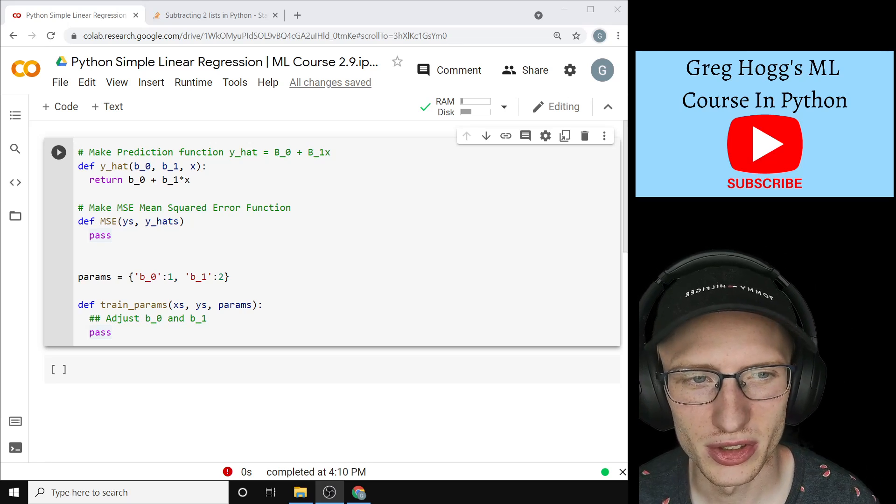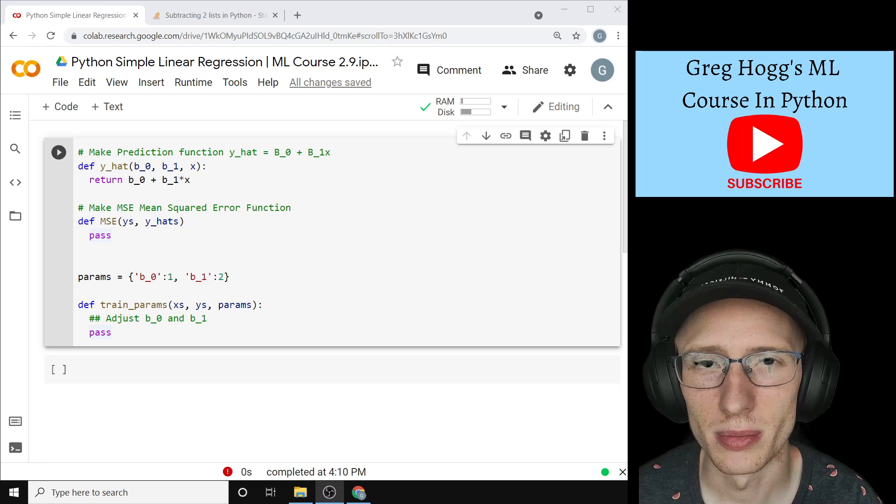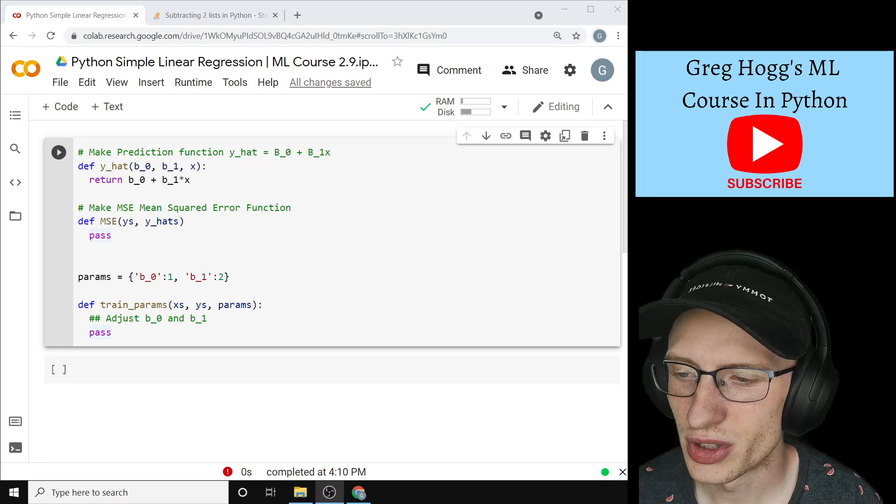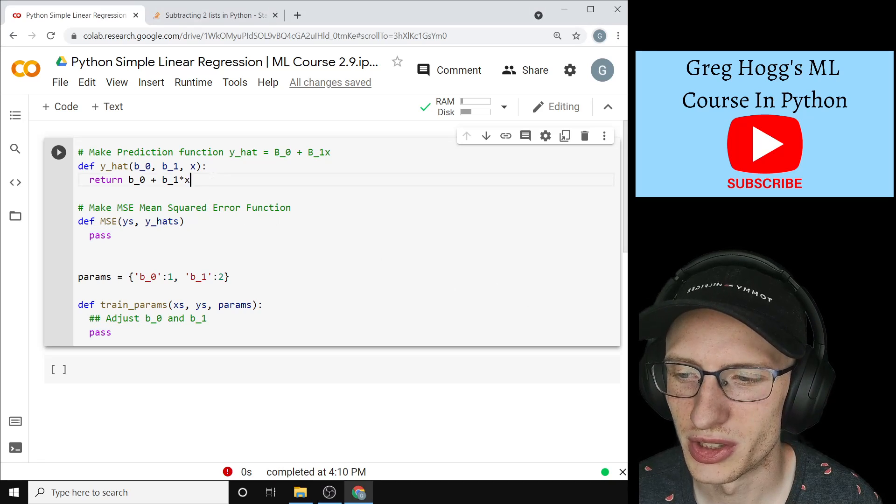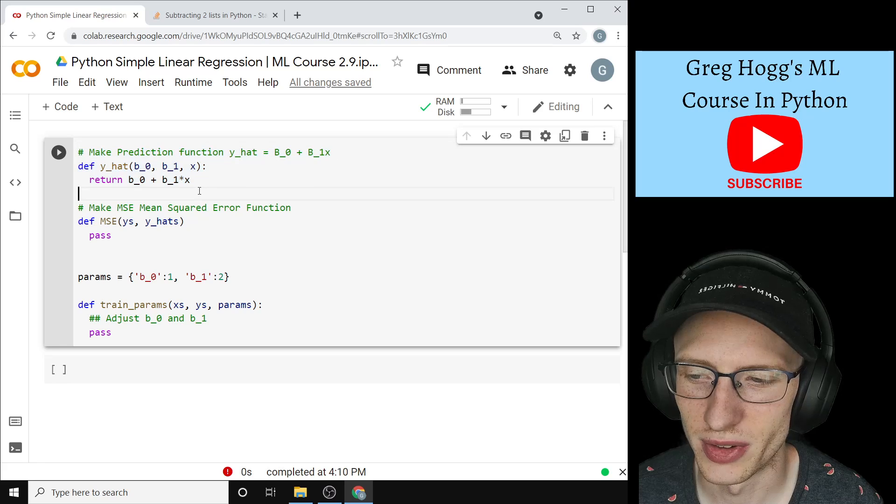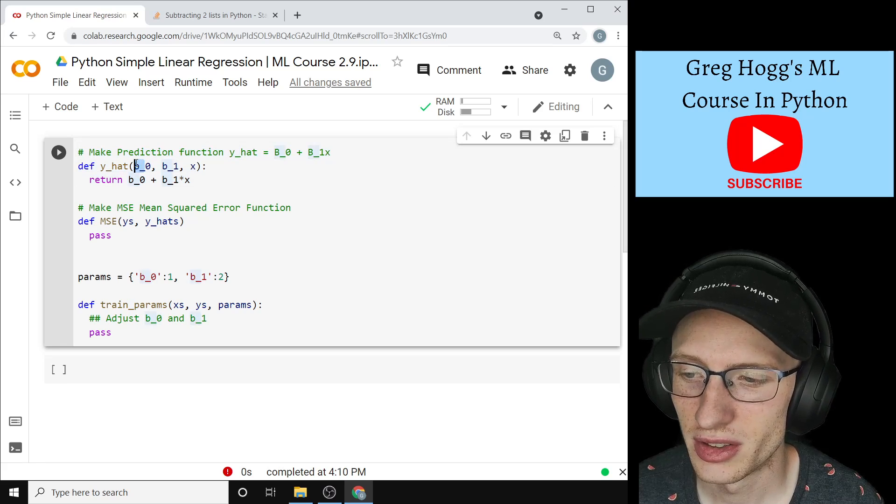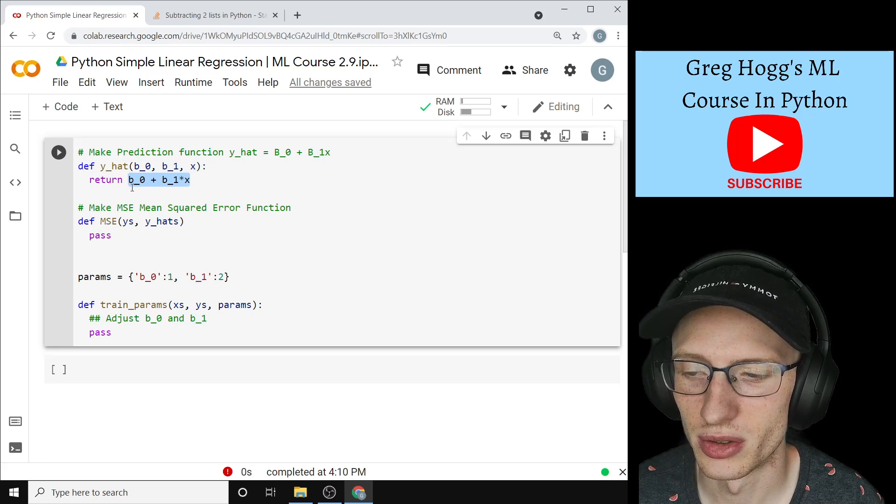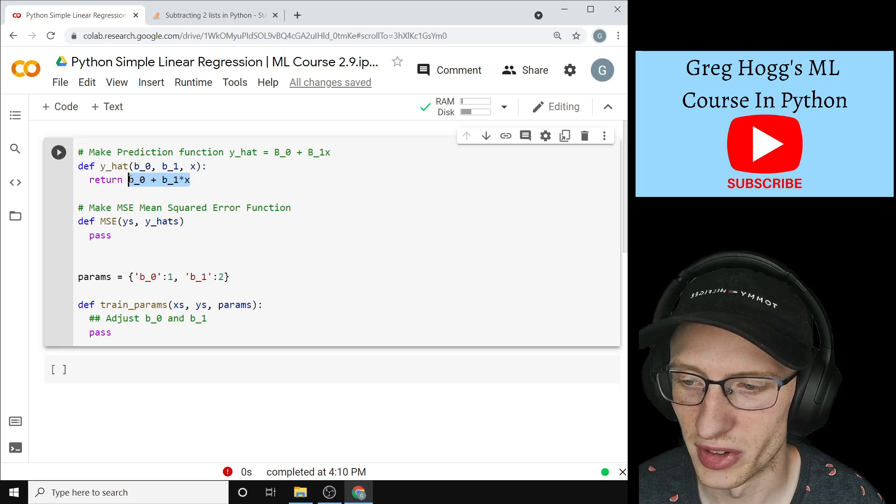Hi everybody, welcome back. So last time we did some work on making the Python simple linear regression implementation, and we showed basically the groundwork, which is this prediction function. It's very easy. Given some beta naught, some beta 1, and some input x value, it's going to return the prediction y hat, which is this formula right here.